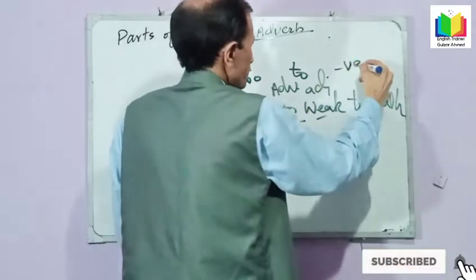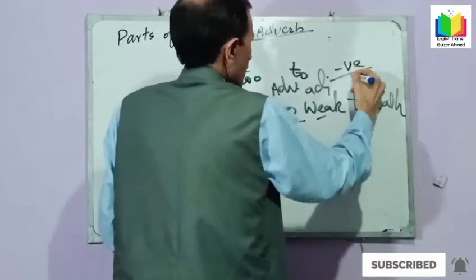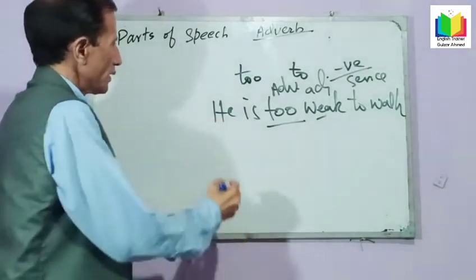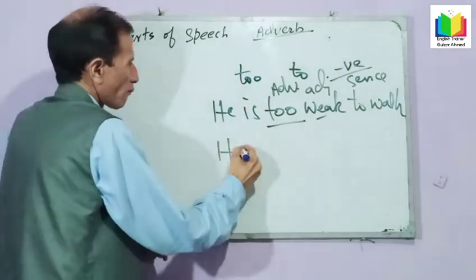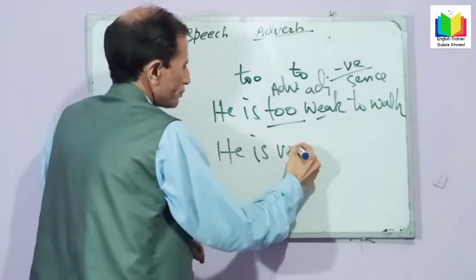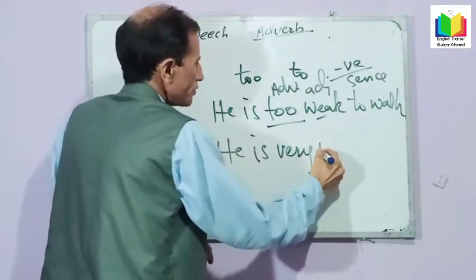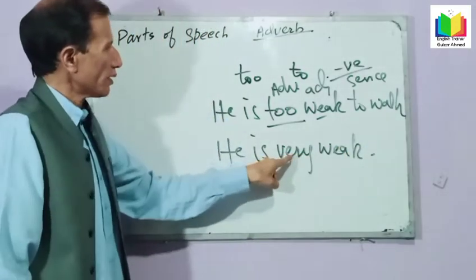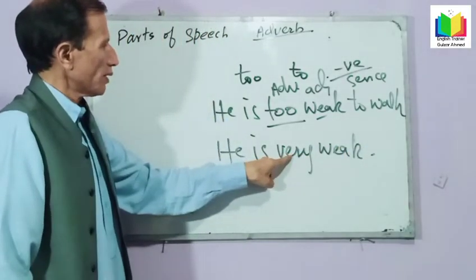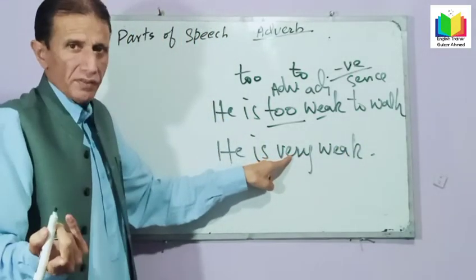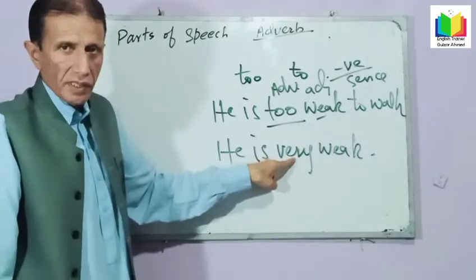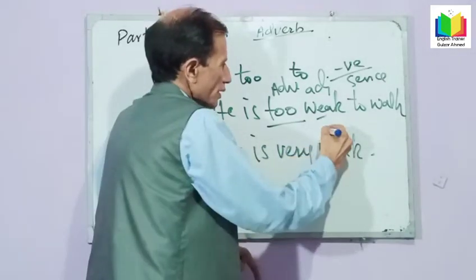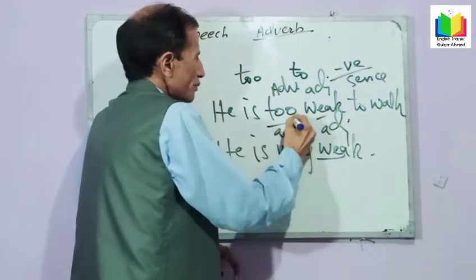But 'very' is positive. For example: he is very weak. So 'very' gives a positive or neutral sense — it simply intensifies the adjective without the negative implication that 'too' carries.